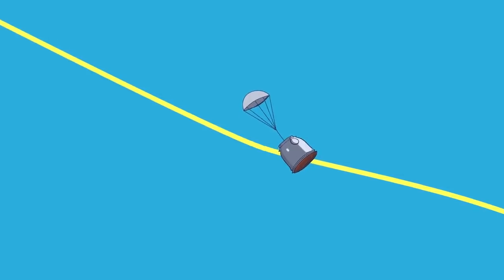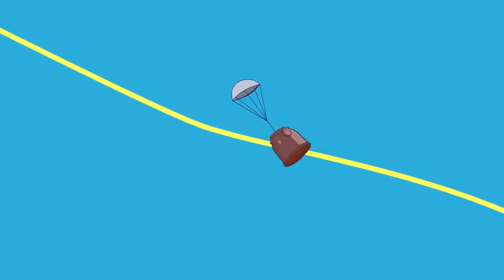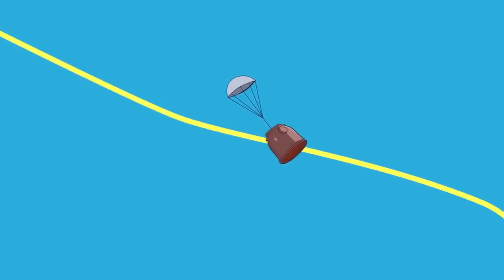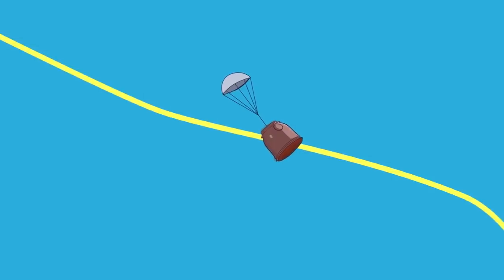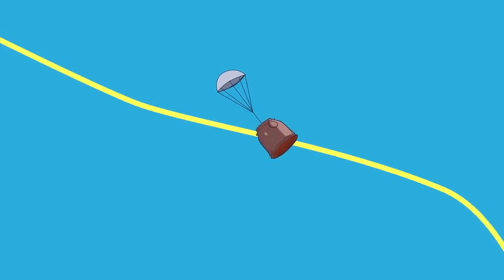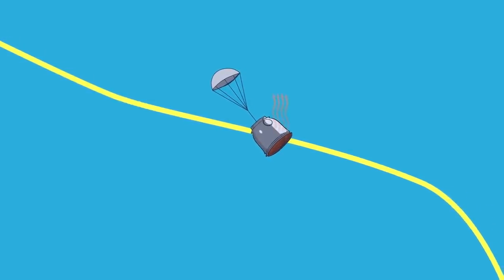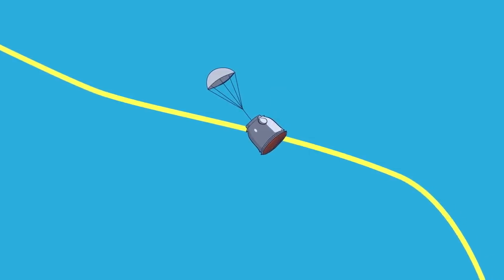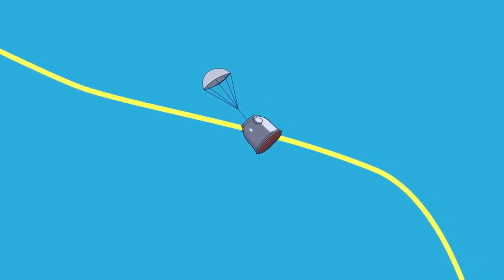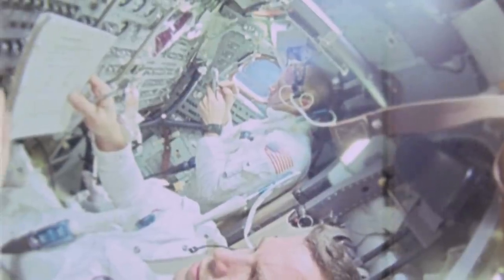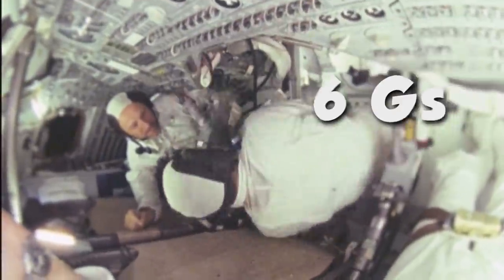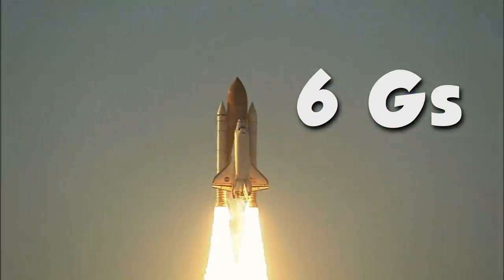The first parachute usually provides preliminary deceleration, with the main parachutes deploying later to ease the capsule all the way towards touchdown. The capsule is suspended below the parachute at a specific angle relative to the ground to help dissipate heat gained through its reentry. With a controlled descent, returning spacecrafts are usually able to minimize the g-forces experienced by the astronauts as much as possible, usually to around four g's, which is a relatively smooth ride compared to the six g's they experienced during liftoff.